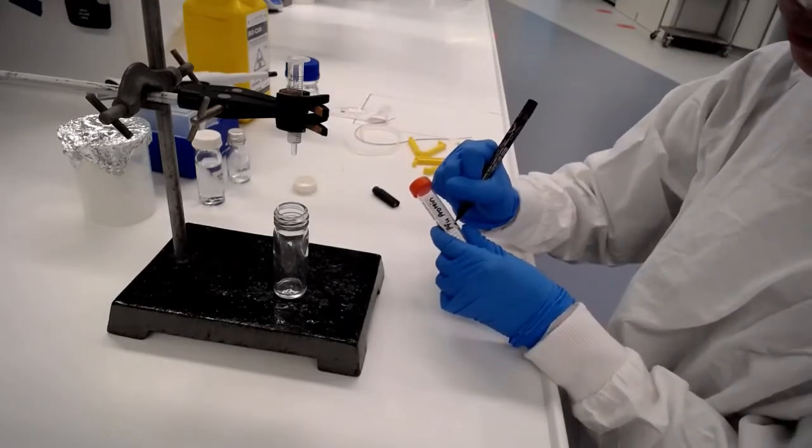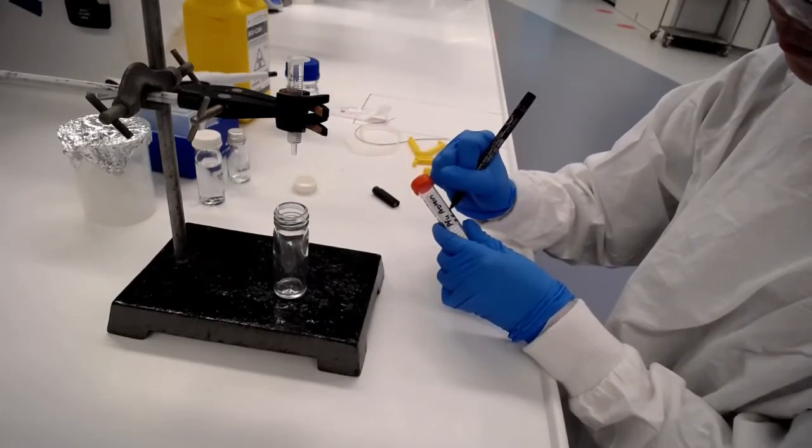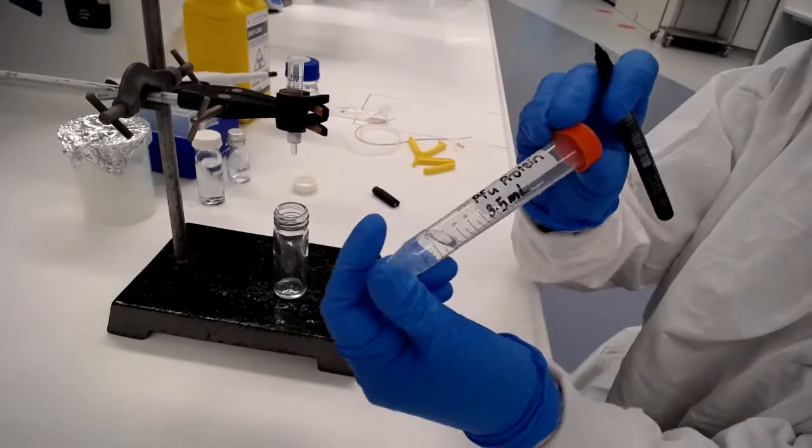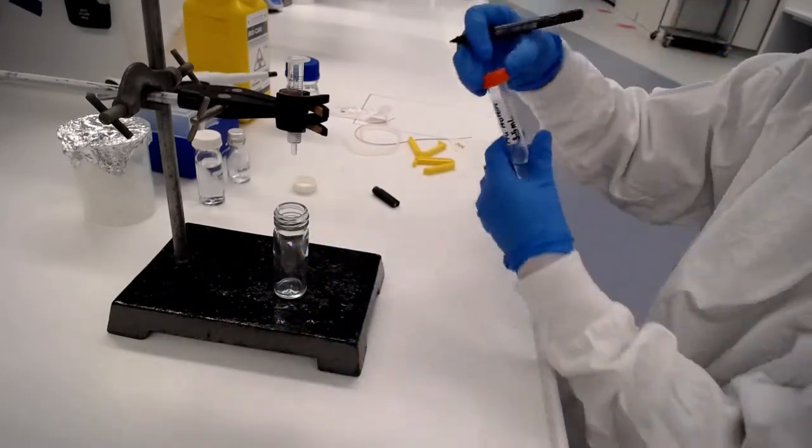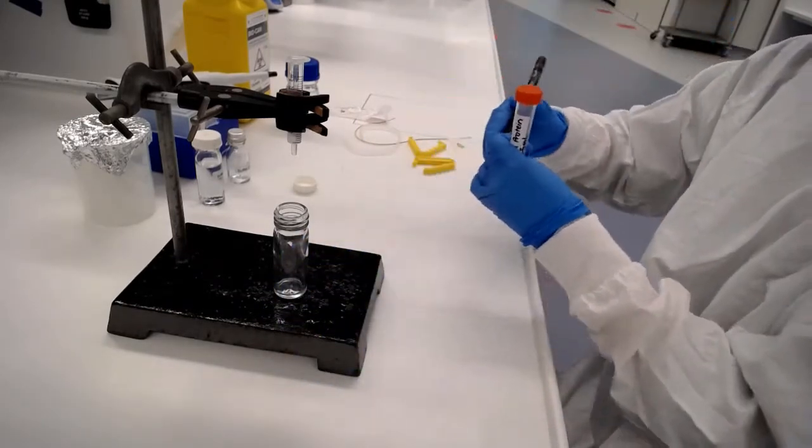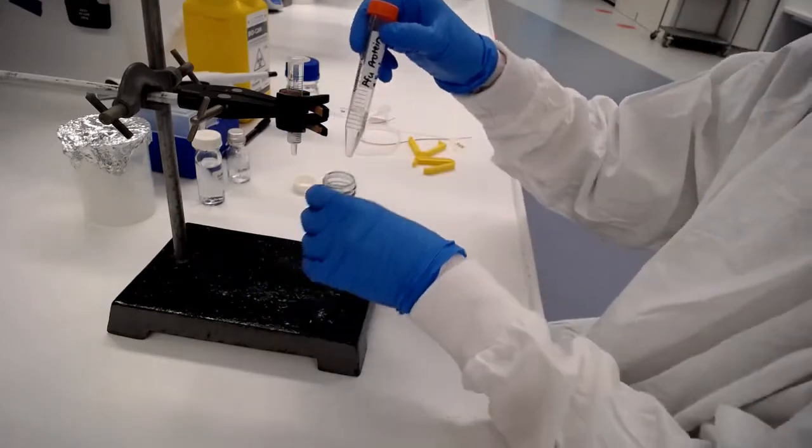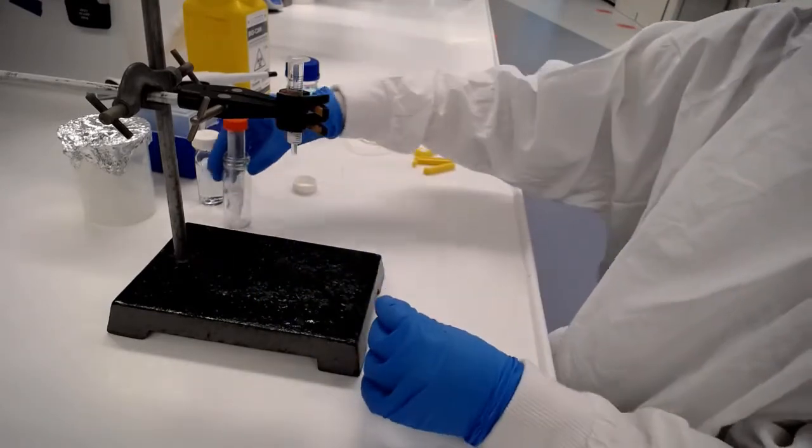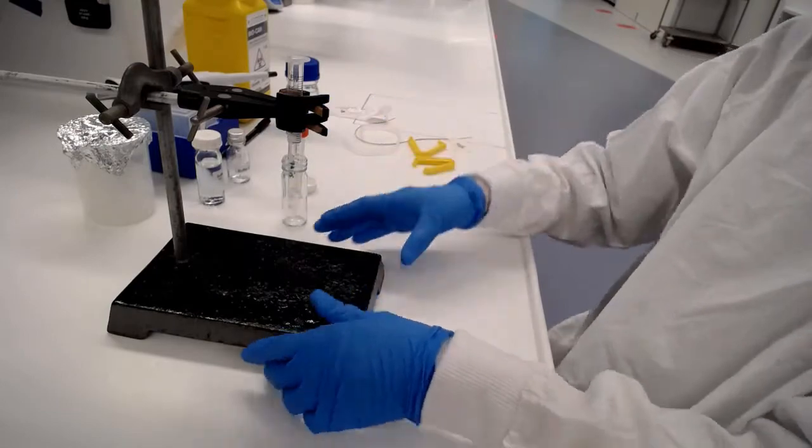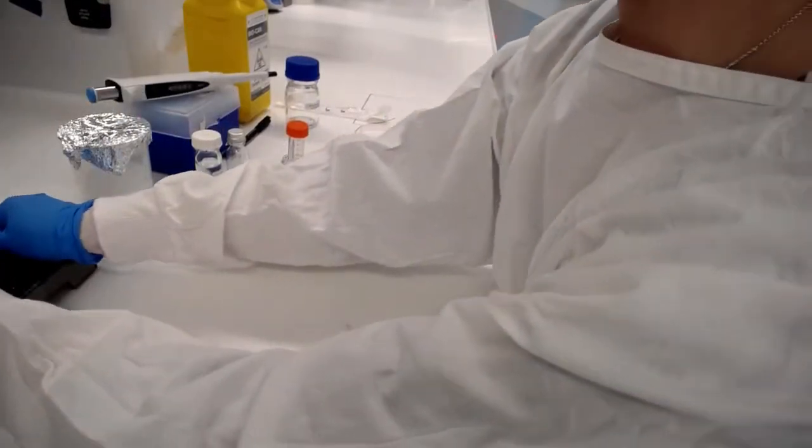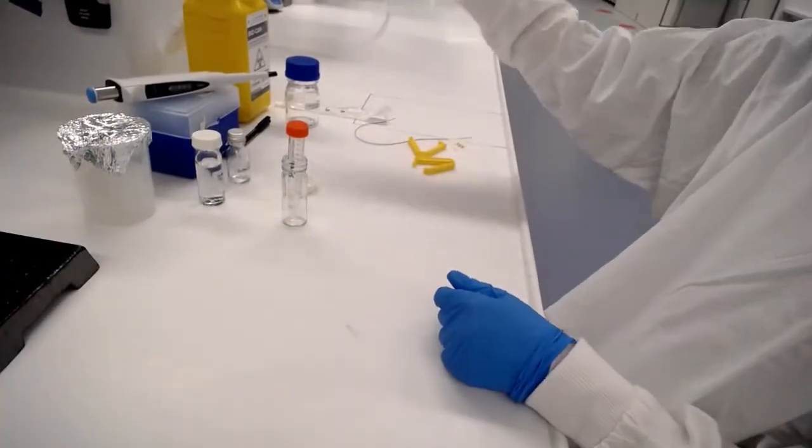It should be close to three mils since that's what we added to the top of the column. Going to write that on the tube here, we're also going to add that to our lab archives notes. The next stage is to transfer this partly purified protein into our dialysis tubing.